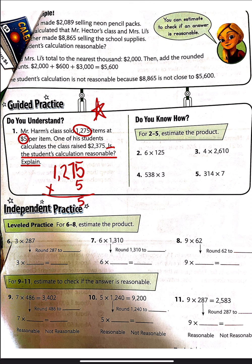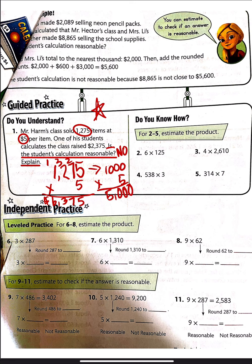5 times 5 is 25. 5 times 7 is 35, plus 2 is 37. Carry my 3. 5 times 2 is 10, plus 3 is 13. $6,375. No, it is not reasonable. Because if you were to round that to the nearest $1,000, round $1,275 to the nearest $1,000 and then times 5, that would be 5,000. 5,000 is way more than $2,375.